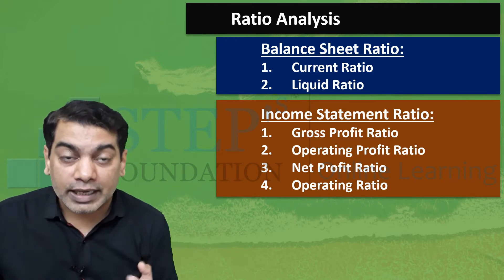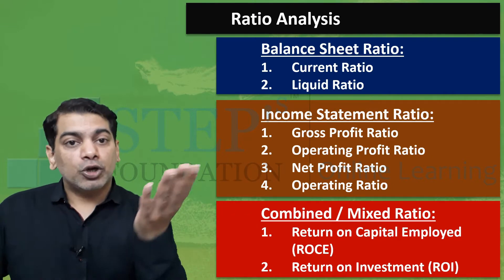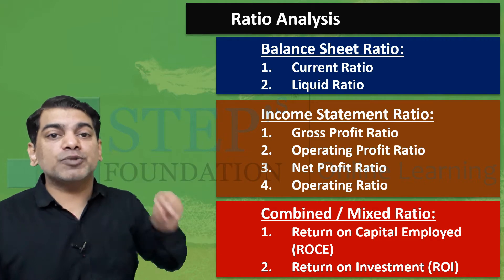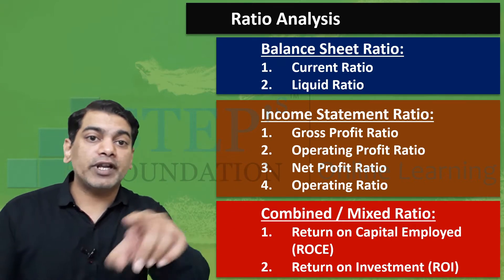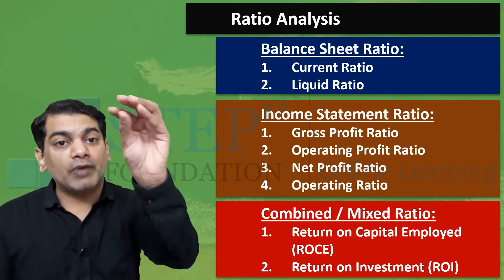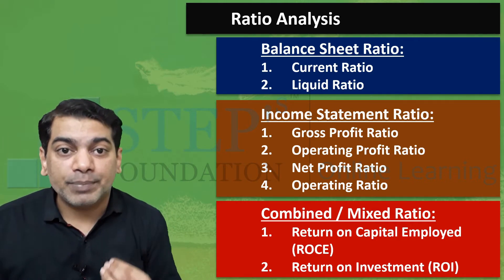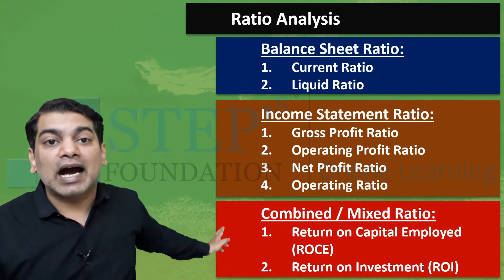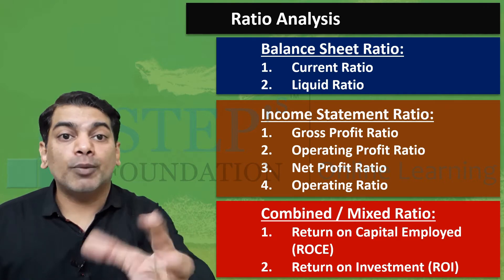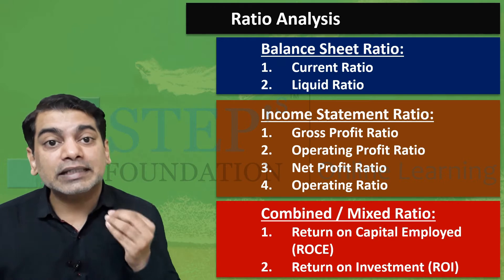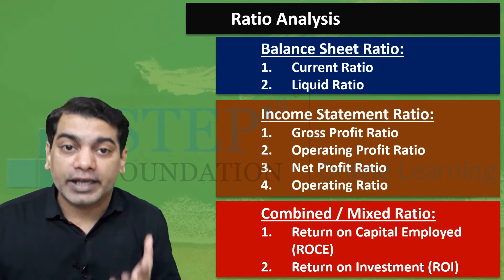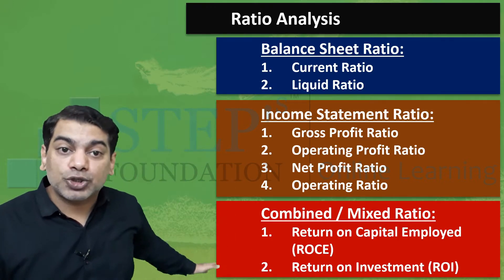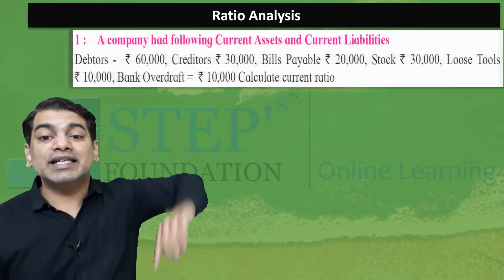The third category is combined, oblique, or mixed ratio, where we have some values from the balance sheet and some from the income statement — profit and loss. Under this category, we have to learn two calculations: ROC, that is return on capital employed, and ROI, that is return on investment. Today we have to learn two formulas only, not all formulas.